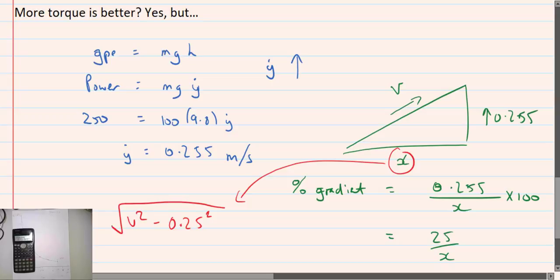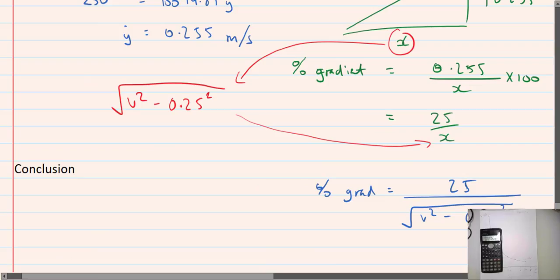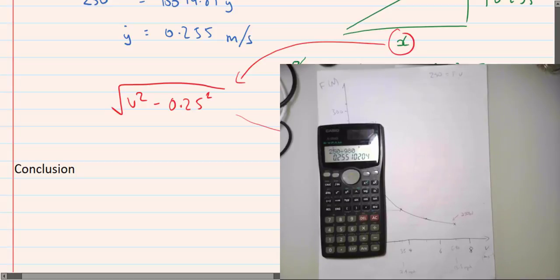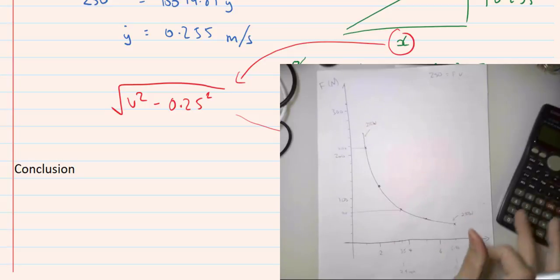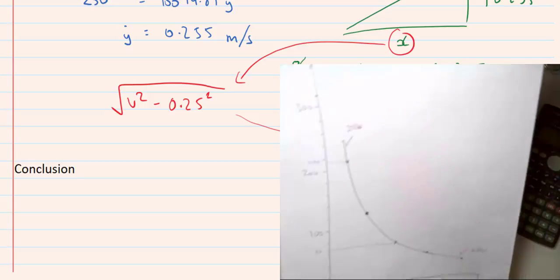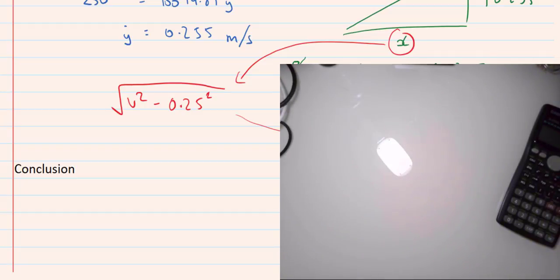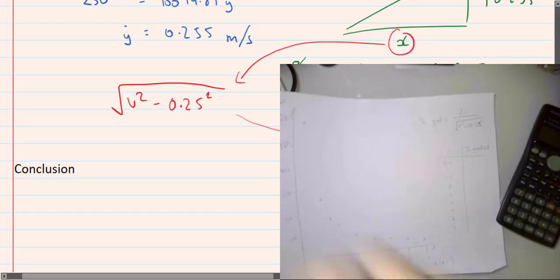Okay. So V squared minus 0.25 squared root of that. That's going to be X. So I'm going to put that in here. What am I trying to do? Am I trying to solve it? No. I'm trying to see the relation between percentage gradient, so that's steepness, and how fast I can go up the hill. How do I see what this looks like? Well, I can go online, put it in Desmos. I can go graph it on Excel. I can get a graphic calculator, or I can do it properly and get a table of values.